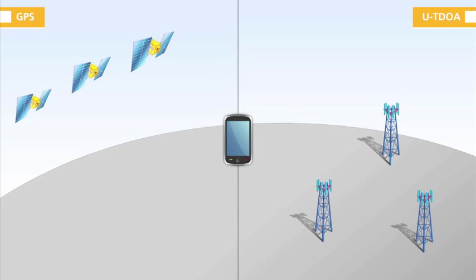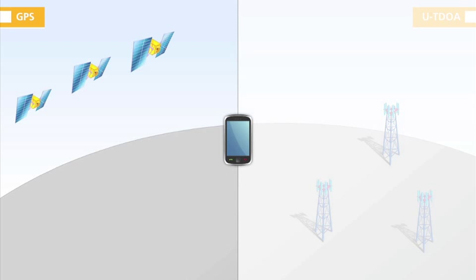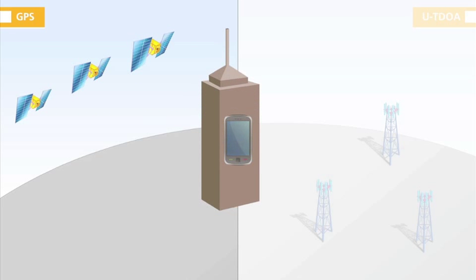In perfect conditions, both technologies can perform well. But if the environment changes, GPS has difficulty locating a mobile phone. In order for GPS to work effectively, the mobile phone needs a clear, unobstructed line of sight to the satellites. If the mobile phone is inside a building, the line of sight is blocked by the steel and concrete, and the signal is too weak to penetrate the building.